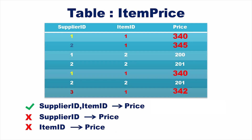Hence, we can say that supplier ID and item ID determine price is a fully functional dependency, because price is not functionally dependent on any subset of the determinant — supplier ID and item ID.